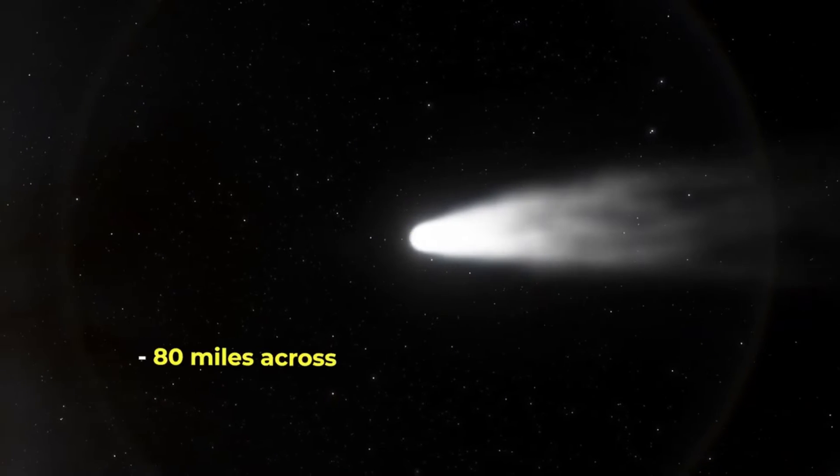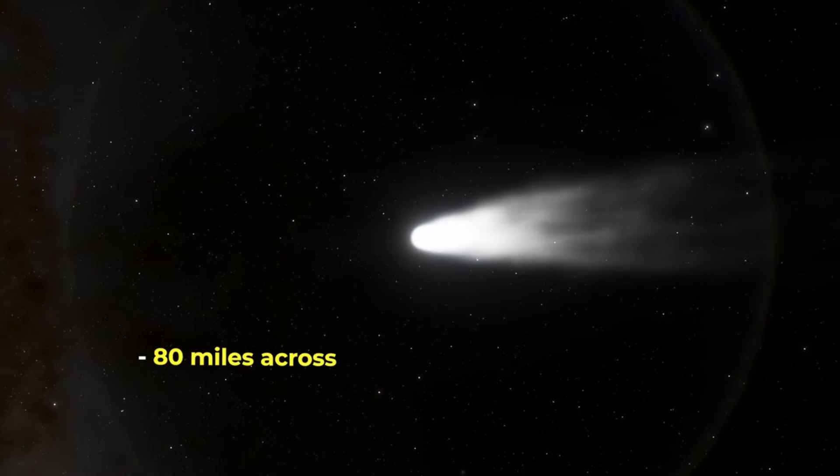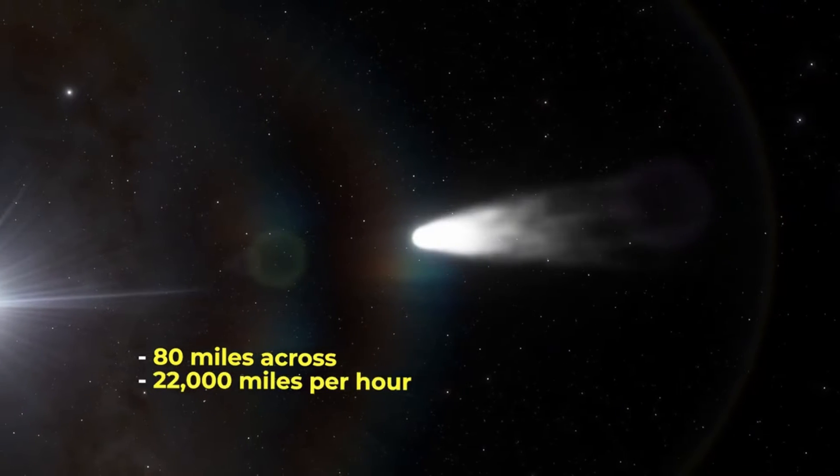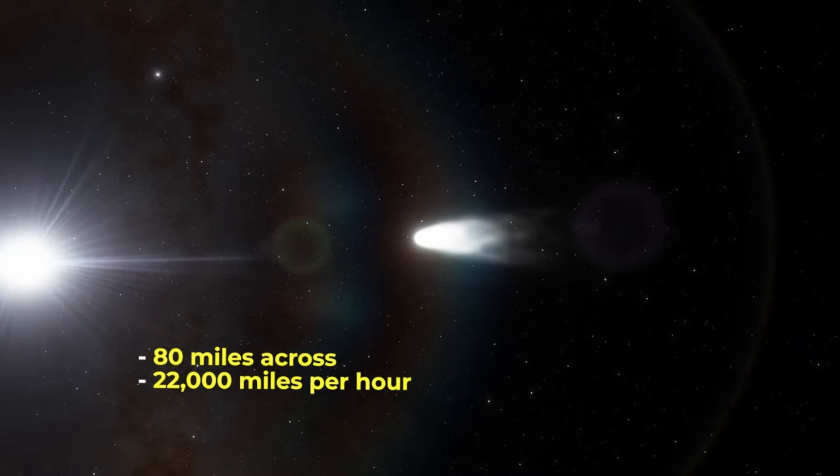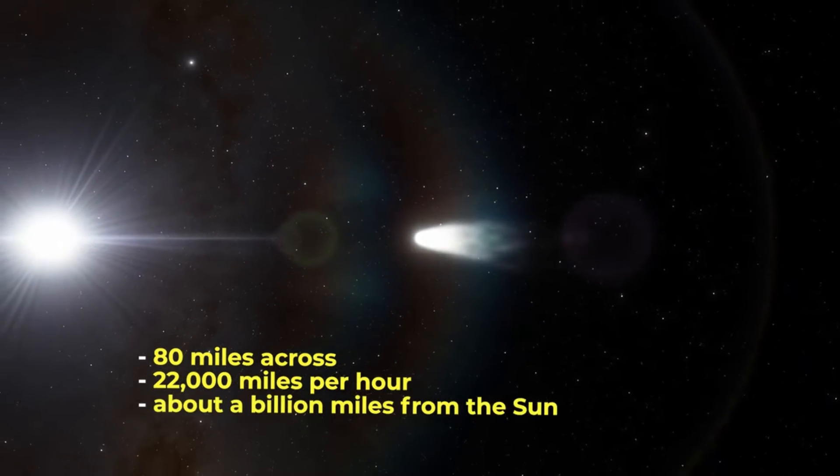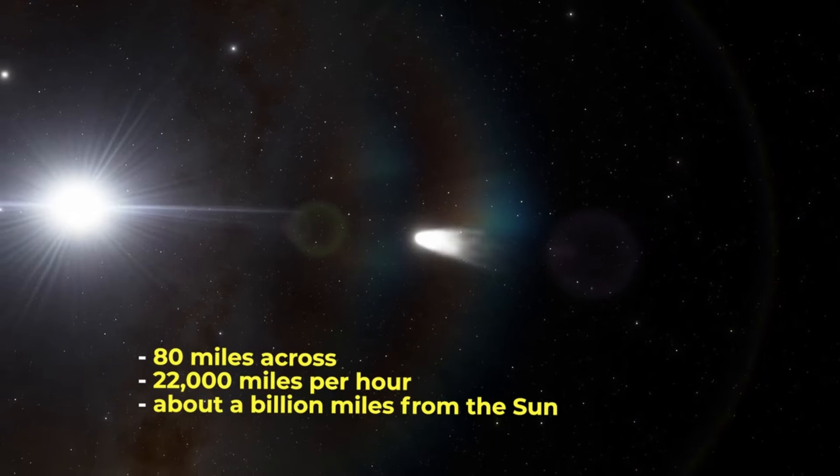The comet is about 80 miles across and is hurtling toward us from the edge of the solar system at 22,000 miles per hour. The good news is that it won't get closer than about a billion miles from the Sun. That's slightly farther out than Saturn.